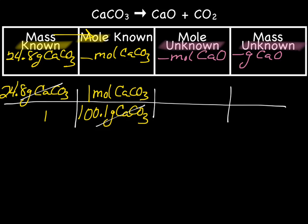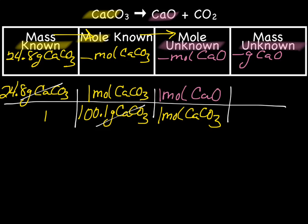Now, we need to convert from mole known to mole unknown. And for mole conversions, we use the mole-mole ratio from the balanced equation. So we find our known in the balanced equation, which is CaCO3, and our unknown, which is CaO. And it looks like we have 1 mole of each. So we will put 1 mole CaCO3 on the bottom, and 1 mole CaO on the top.